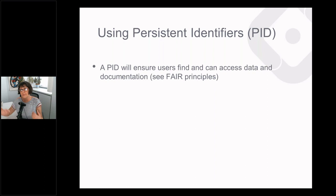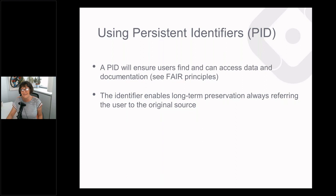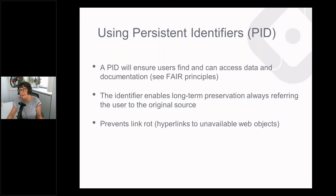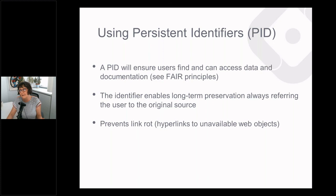If you deposit documentation alongside your study in an archive, long-term preservation issues are taken care of and you don't have to worry about dead-end links. The DOI is a well-known and persistent identifier in academia. Please check out CESSDA's Data Management Expert Guide, Chapter 6, which offers information on archiving and publishing. Your harmonized dataset together with documented metadata can be stored in data archives, which will provide a link to the documentation right there, with benefits including comprehensibility, visibility, findability, reusability, longevity, and quality checking by the archive itself.